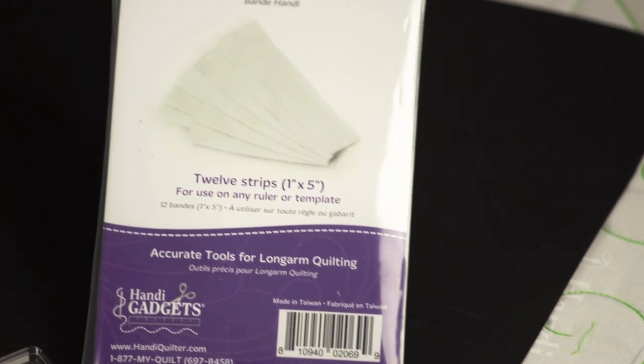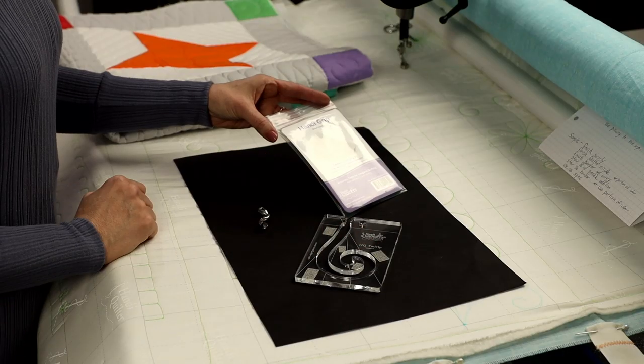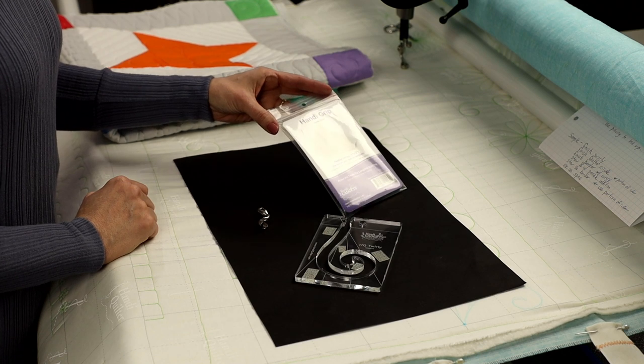You'll also want to use Handy Grip. I don't know that you can see this, but I've got Handy Grip all over on this ruler already so that we can quilt with it.